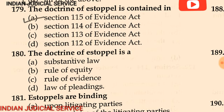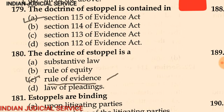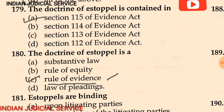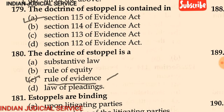Question 180: The doctrine of estoppel is — (A) a substantive law, (B) a rule of equity, (C) a rule of evidence, (D) law of pleading. The answer is: it is a rule of evidence. According to common law it was a rule of equity, but now it is a rule of evidence. If the option 'rule of evidence' is available, we should choose that. Option C is correct — the doctrine of estoppel is a rule of evidence.